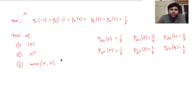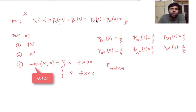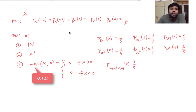Now let's do max(X, 0). This equals X when X is greater than 0, and equals 0 when X is less than or equal to 0. In this case it takes three values: 0, 1, and 2. The probability that max(X, 0) equals 0 — this happens when X takes value minus 2, minus 1, or 0. So we write 3 by 5, since each of those three values has probability 1 by 5.